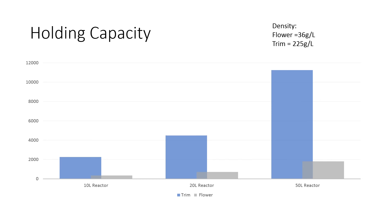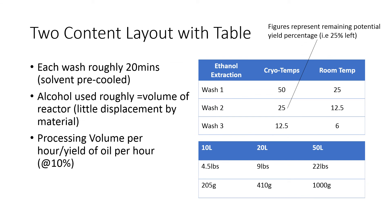Basically, a 10-liter reactor could hold around 2,000 grams of trim. A 20-liter reactor holds a little over 4,000. And the 50-liter reactor could do almost 11,000 grams of trim. With each wash taking roughly 20 minutes, you could get through three washes in an hour. At cryo temperatures you're going to need three washes, whereas at room temperature you could probably get away with just two — although the ultrasonic agitation system will definitely reduce the difference between the two. We've used three washes to estimate the figures below. The middle row on the bottom table is the amount of trim processed per hour, and the bottom row is the amount of oil yielded per hour.